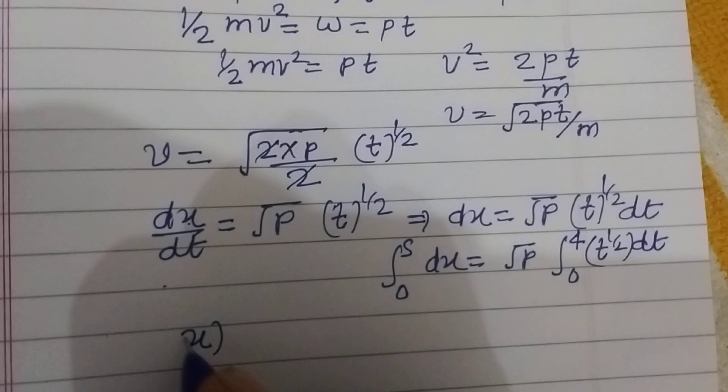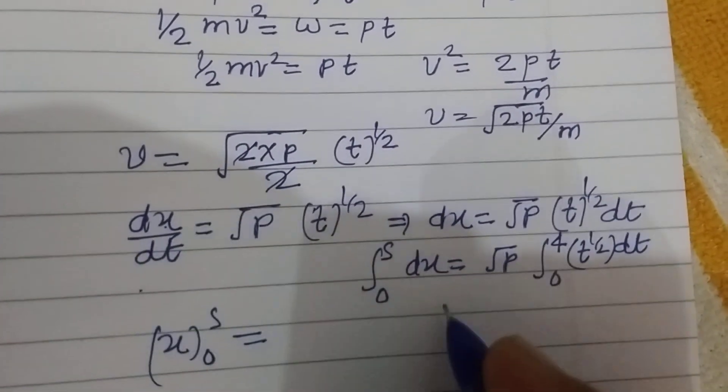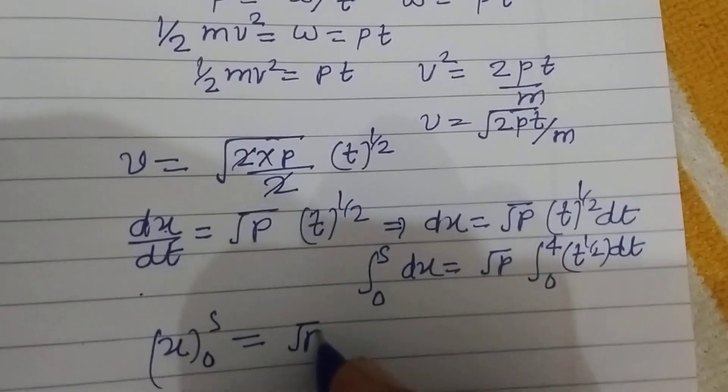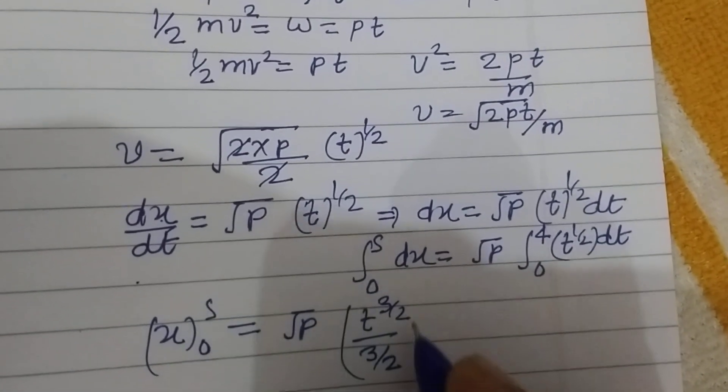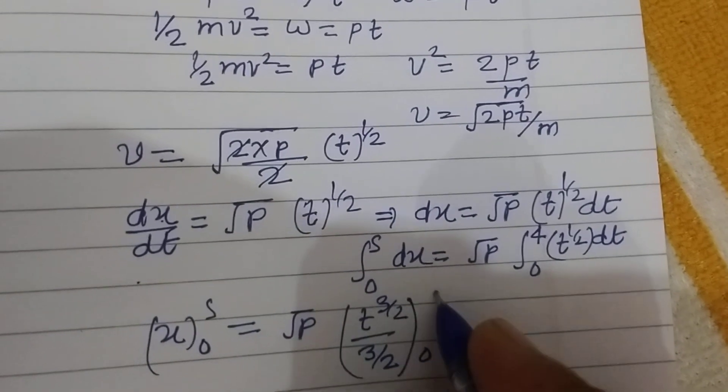So this is x from 0 to s, and this is square root P, T to the power 3/2 upon 3/2, from 0 to 4.